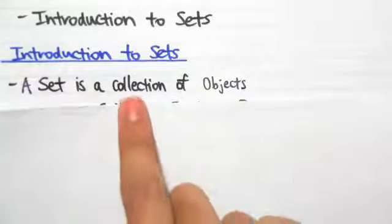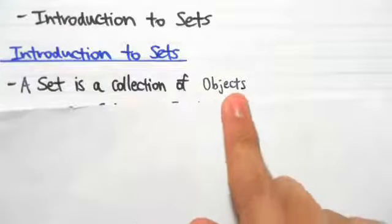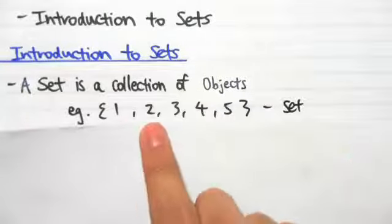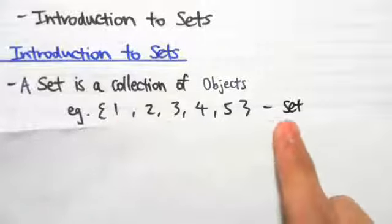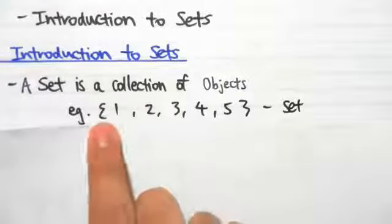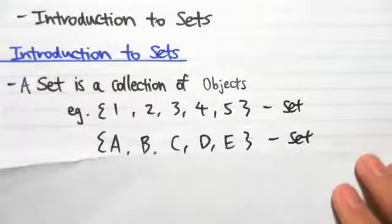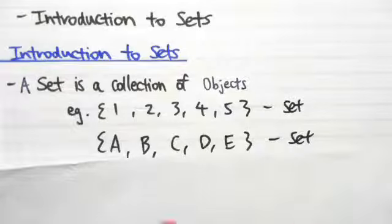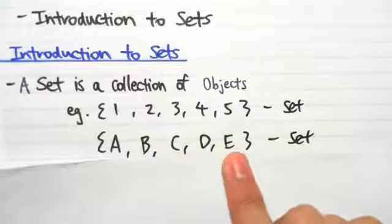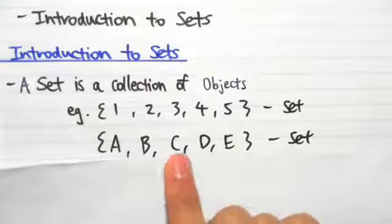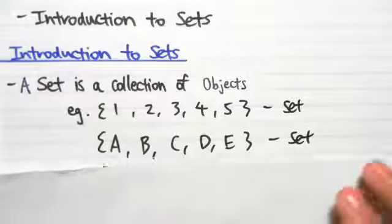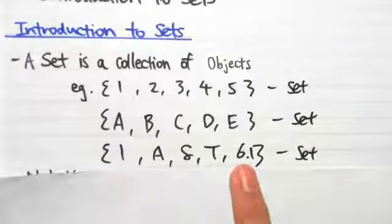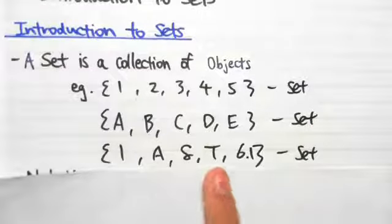A set is a collection of objects. For example, you could have a set of numbers: 1, 2, 3, 4, and 5 — you can call this entire thing a set. Or you can have a set of letters A, B, C, D, and E, and you can also call this a set. Or you can have a mixture of numbers and letters, and you can also call this a set.